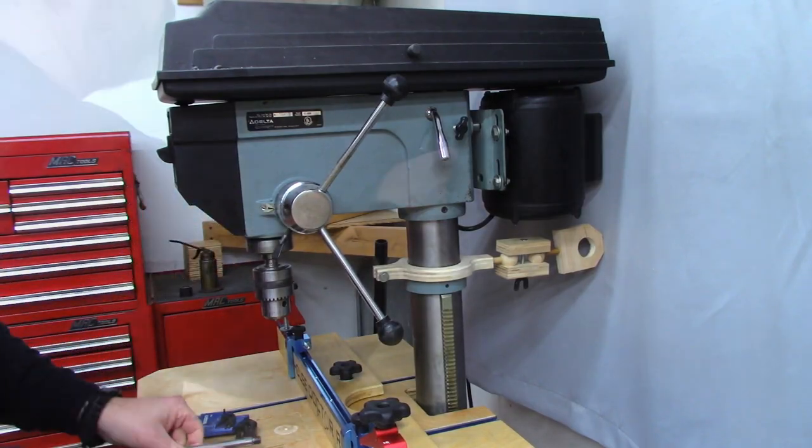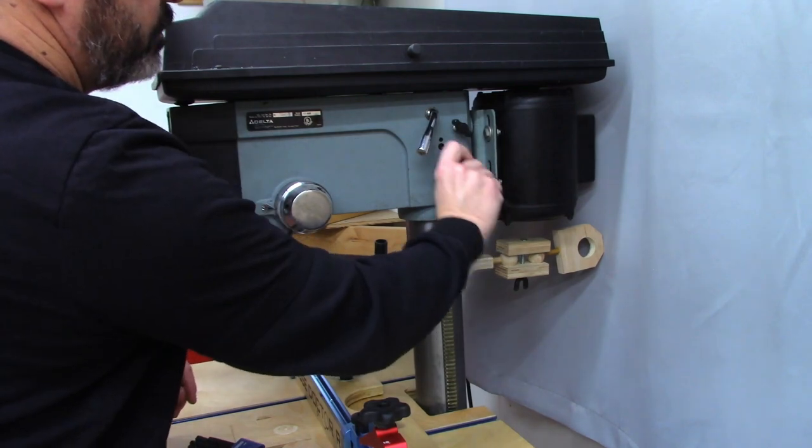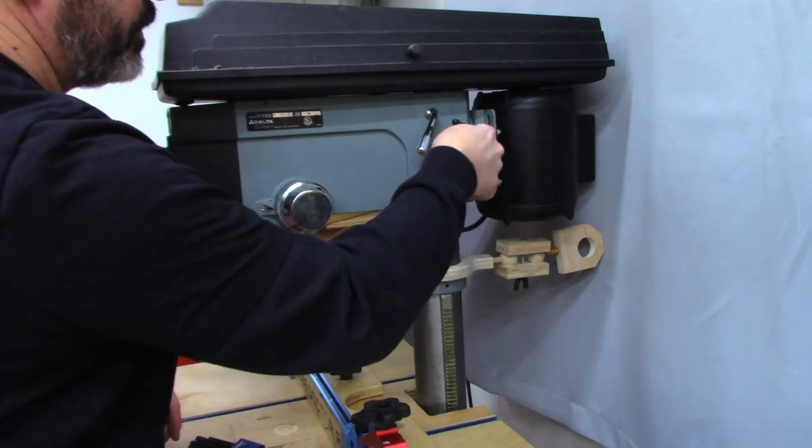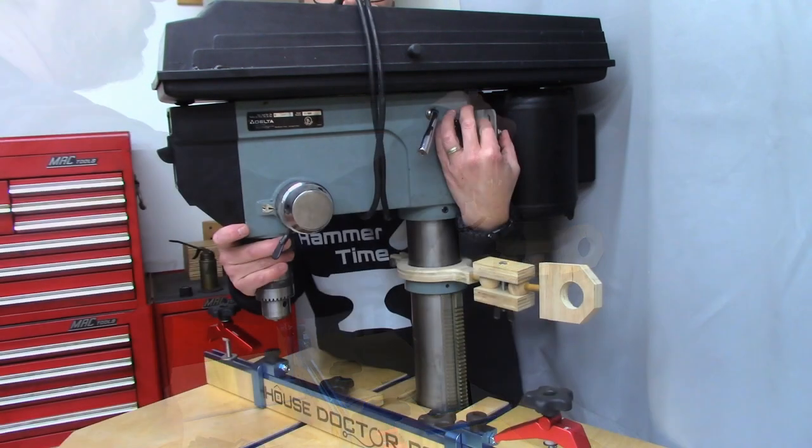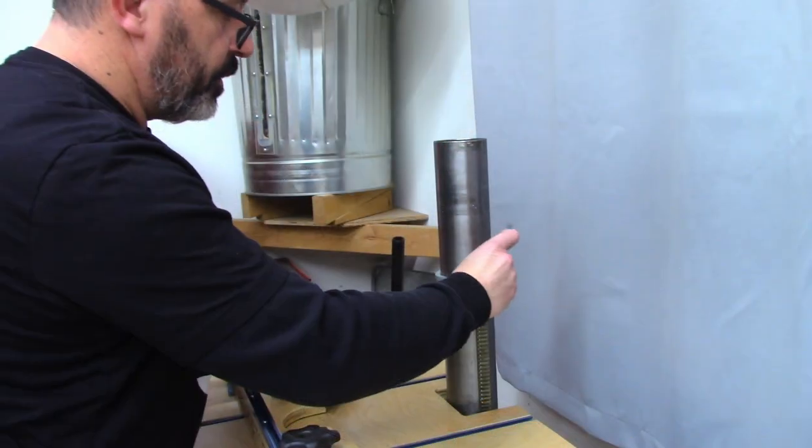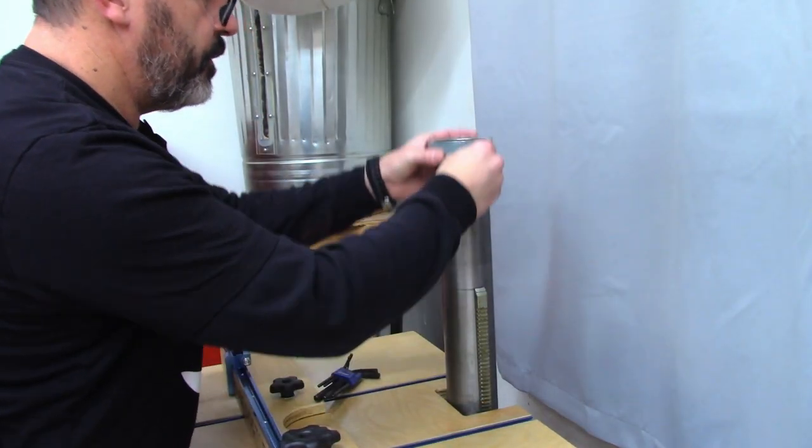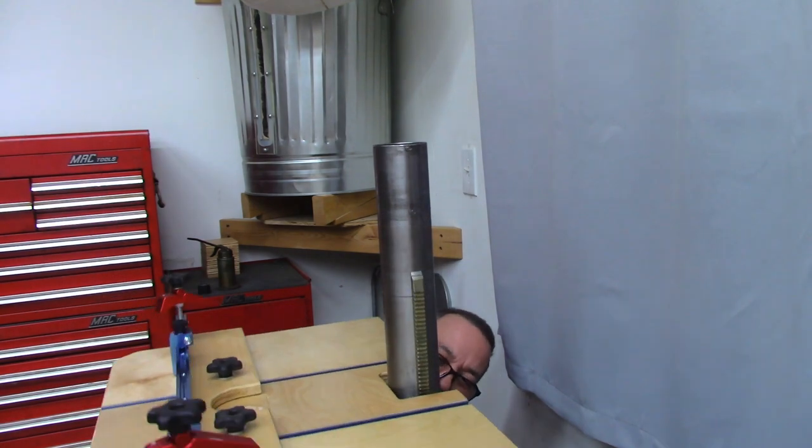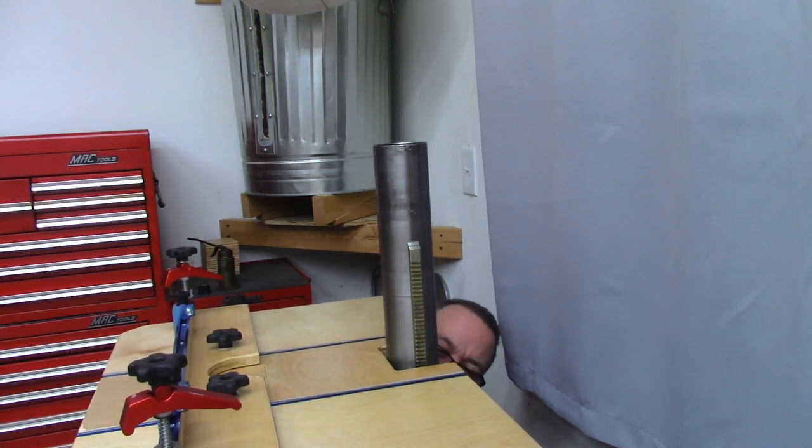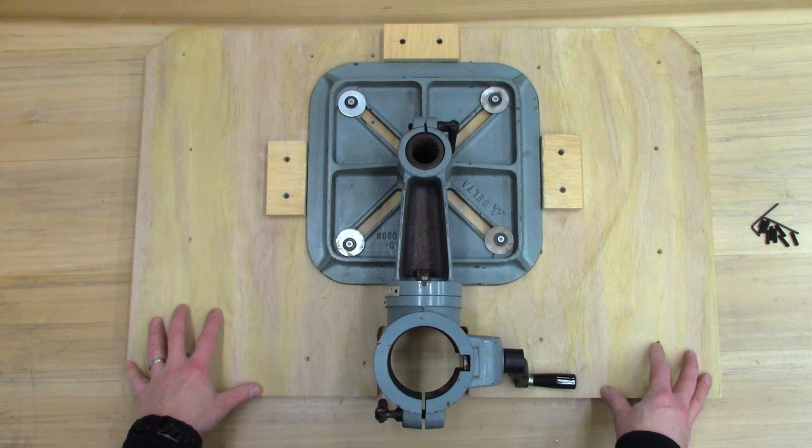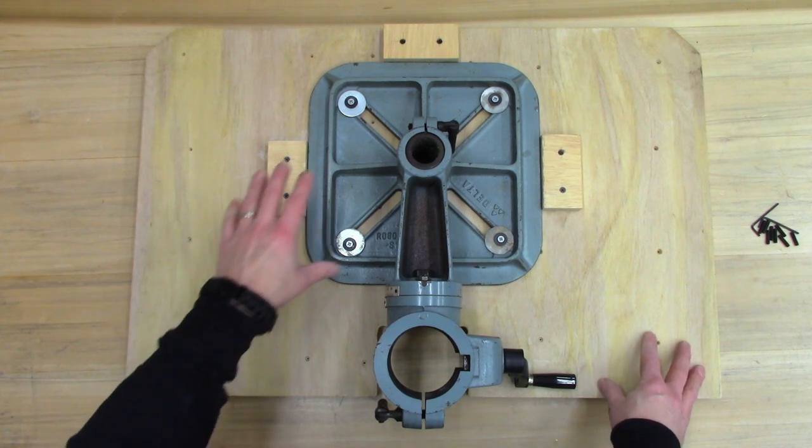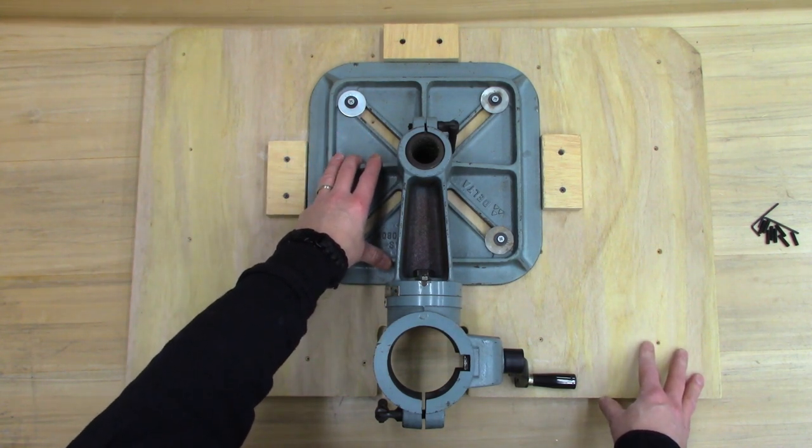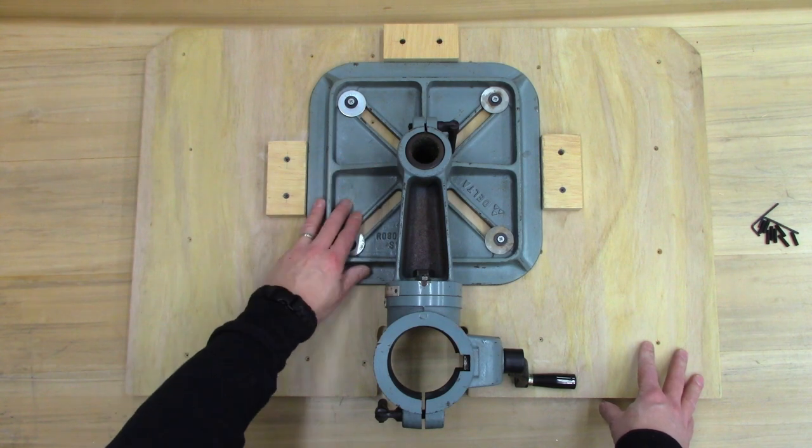You don't necessarily have to take the drill press apart to do this, but it will make it a lot easier. I'm definitely going to do it because it'll be almost impossible for me to film this without taking it apart. I'm just going to pull the head off, lift the table off, and work on it upside down over on the bench. I have the auxiliary drill press table upside down on my workbench, and I have the table that came with the drill press still attached to it.